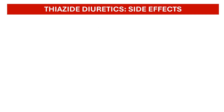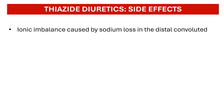While thiazide diuretics are generally well-tolerated and effective, they can have side effects. These usually stem from the ionic imbalance caused by the initial sodium loss in the distal convoluted tubule. Hypokalemia, or low potassium level, is a common side effect and can cause muscle weakness, cramps, and irregular heart rhythms. This happens because an increased concentration of sodium ions in the collecting duct causes it to secrete more potassium and hydrogen ions from the blood into the urine.